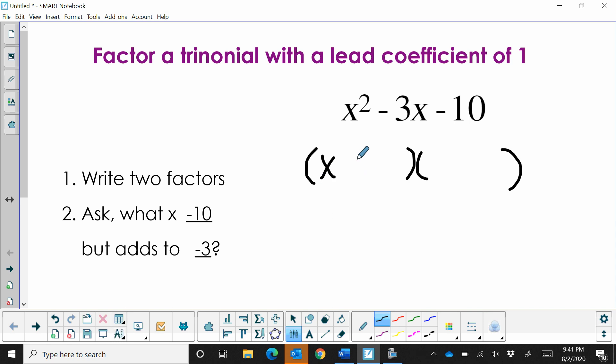This is going to be an x because it's got to multiply, x times x multiplies to x squared. So that's going to be the first term in each binomial.